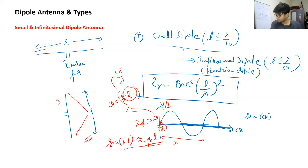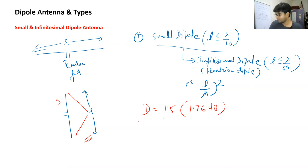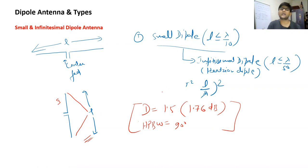The directivity of a small dipole is 1.5 in absolute terms, or 1.76 dB. The half power beam width of a small dipole antenna is 90 degrees. These are important parameters to remember. The radiation pattern of the dipole antenna will be discussed in the last part of this lecture.